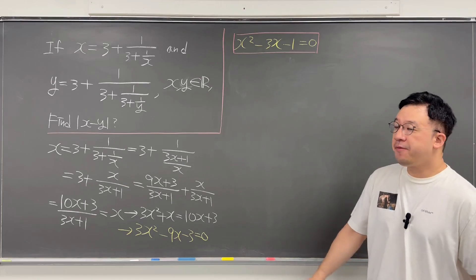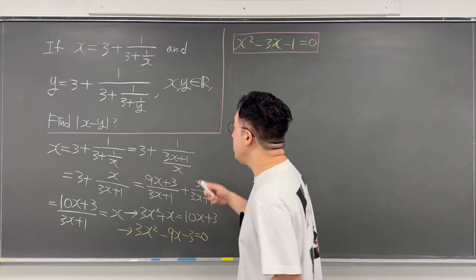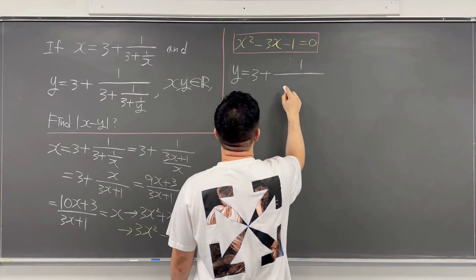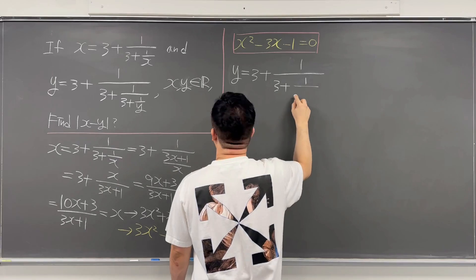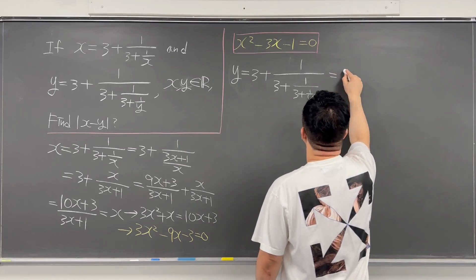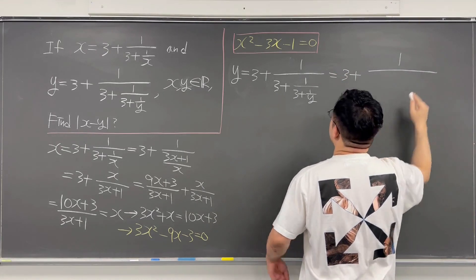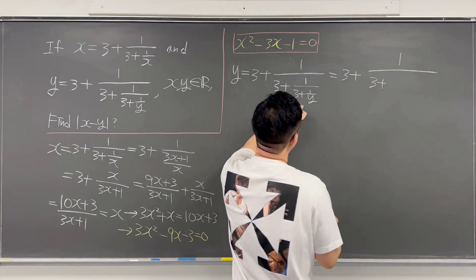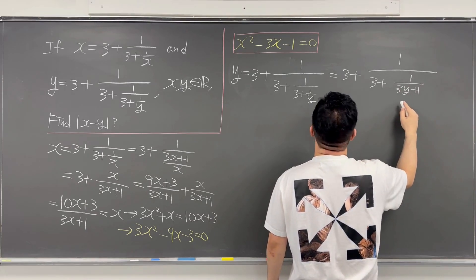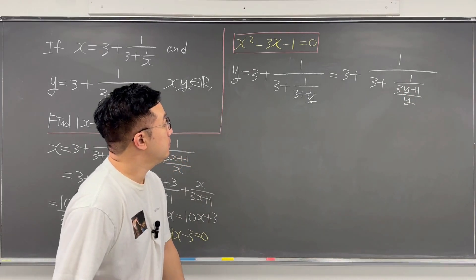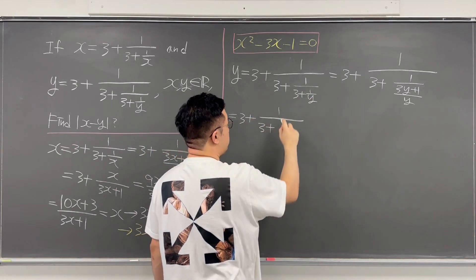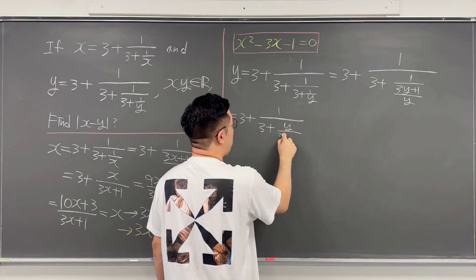Okay, let's keep that and now work on the y part the same way. y was equal to 3 plus 1 over 3 plus 1 over 3 plus 1 over y. So this is the same as 3 plus 1 over 3 plus — the inner fraction becomes y over 3y plus 1.